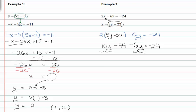Adding like terms, I get four y minus forty-four is equal to negative twenty-four. Adding forty-four to both sides, I now have four y is equal to positive twenty.